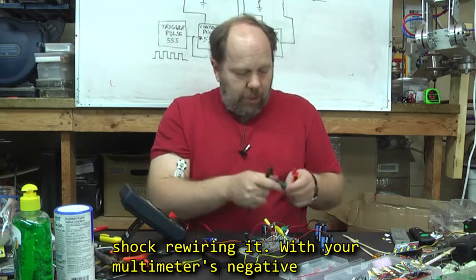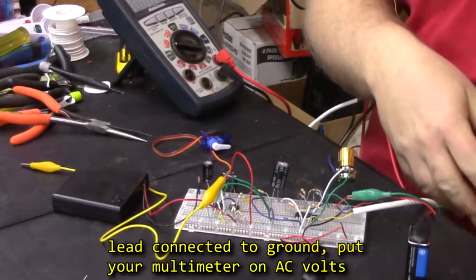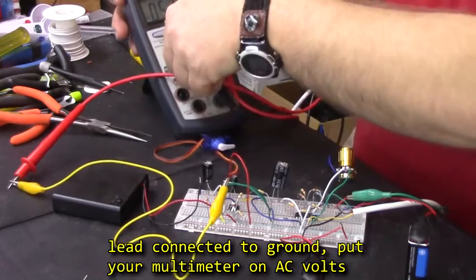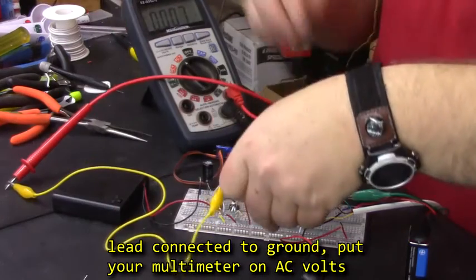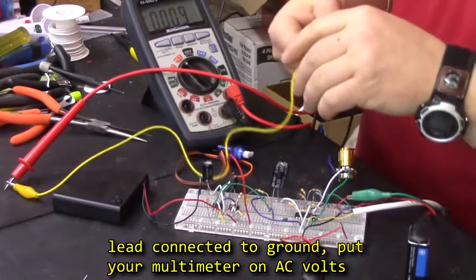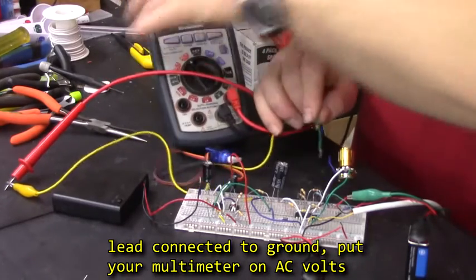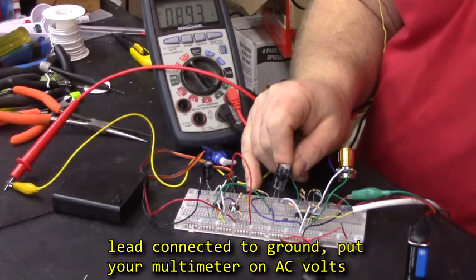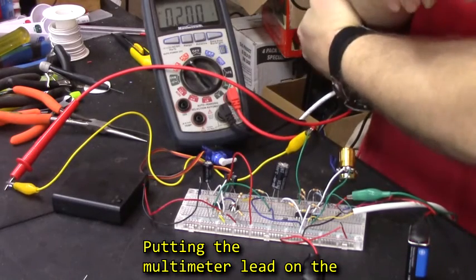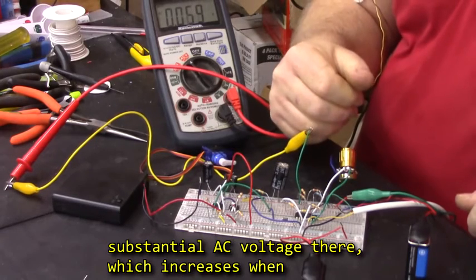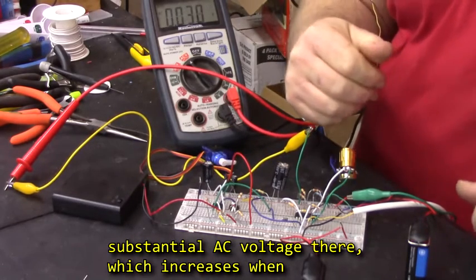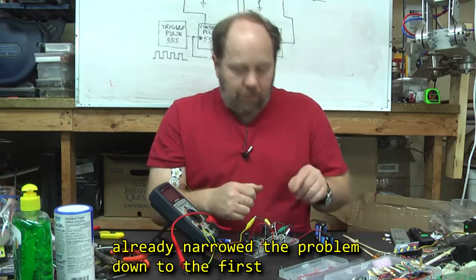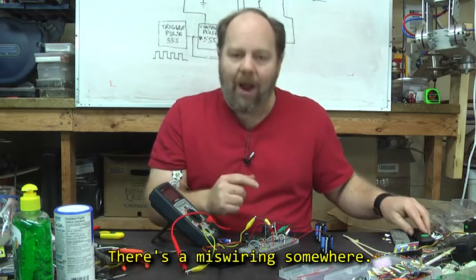With your multimeter's negative lead connected to ground, put your multimeter on AC volts. Putting the multimeter lead on the output of the third op-amp, you should get a fairly substantial AC voltage there, which increases when you flex your pipes. If it does not, you've already narrowed down the problem to the first three op-amps or the gain. There's a miswiring somewhere.